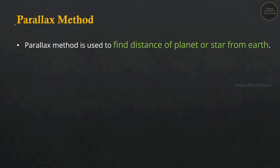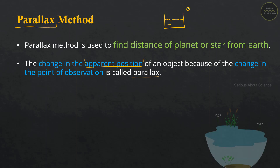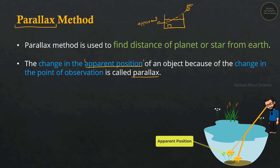In the Parallax method, we will find what Parallax is. The change in apparent position of an object because of the change in point of observation is called Parallax. That is, when the point of observation of an object changes, the apparent position changes — that phenomenon is Parallax.